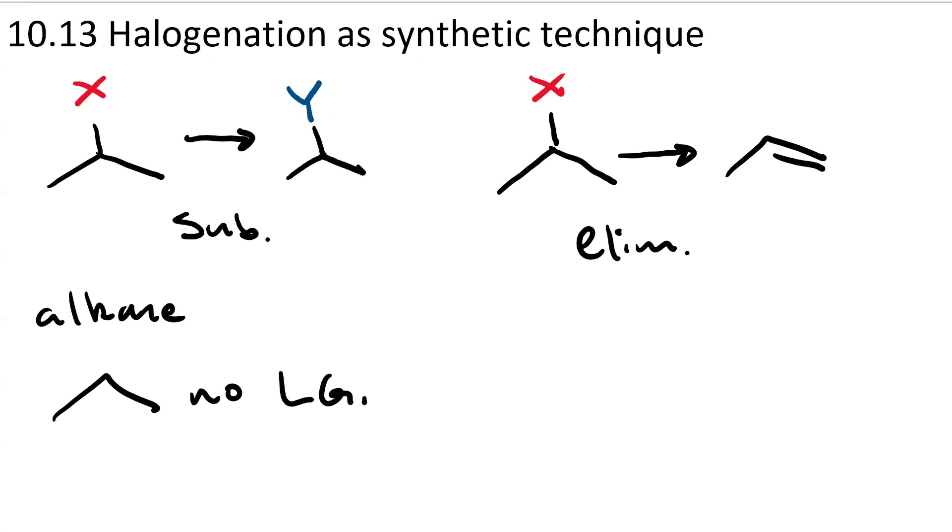Another type of reaction we learned was elimination. You treat something that has a good leaving group on it with a base, and you end up with an alkene.